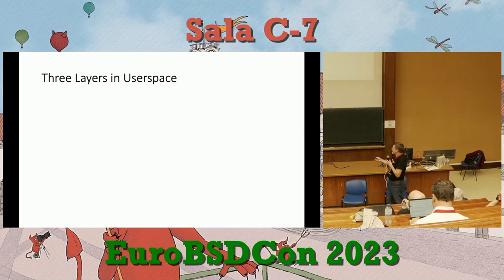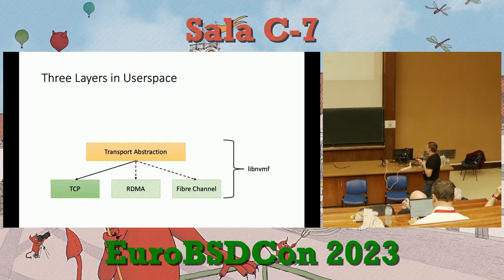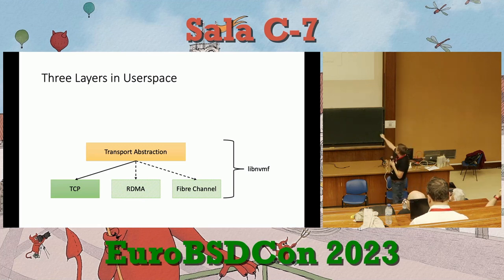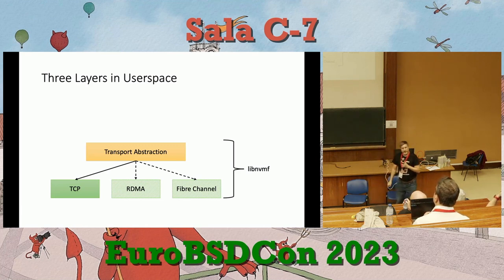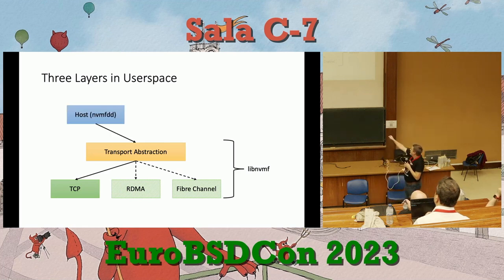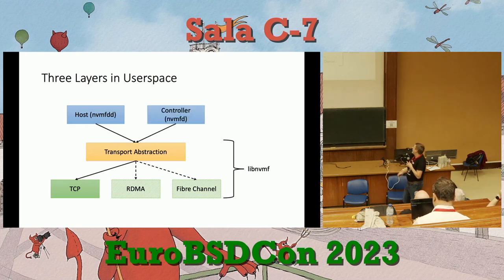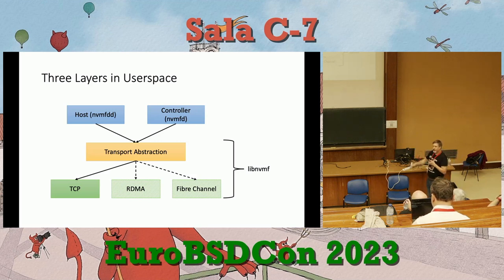In the user-space implementation, the three layers are: libnvmf handling the transport abstraction layer, with TCP implemented and RDMA and Fibre Channel stubbed out for the future; an nvmfdd host; and a controller — giving me the full user-space stack.